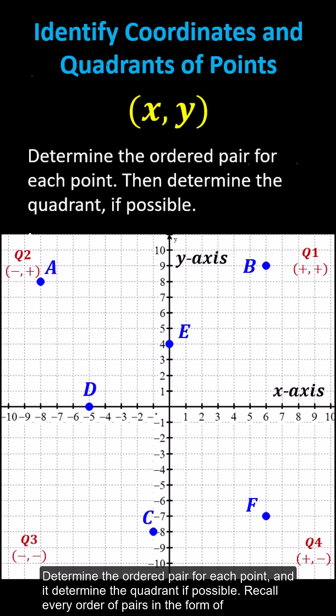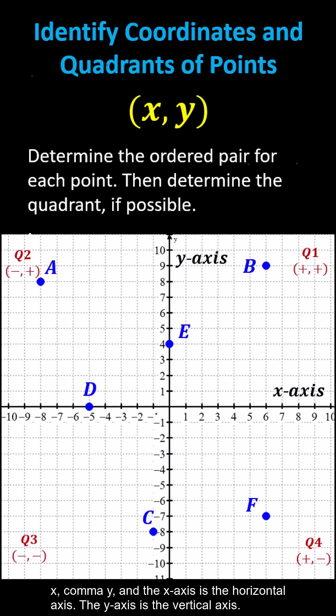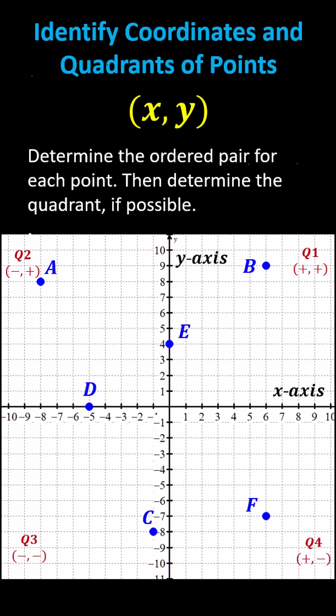Determine the ordered pair for each point, then determine the quadrant if possible. Recall every ordered pair is in the form of (x, y), where the x axis is the horizontal axis and the y axis is the vertical axis.